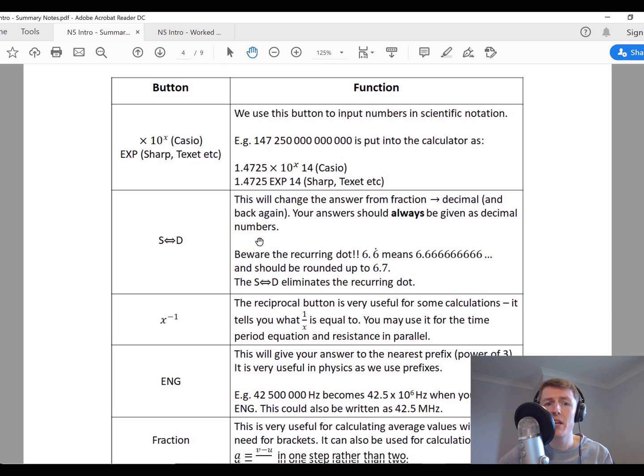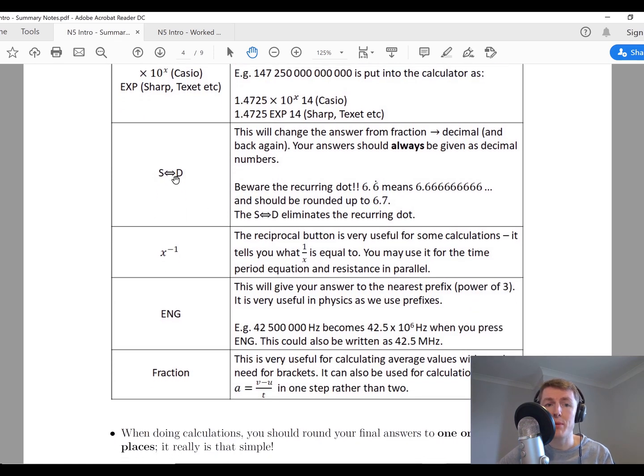The next button is the S to D, which basically changes fractions into decimals and decimals back to fractions again. In physics we don't use fractions, so stay away from fractions, and so this button can be very handy.